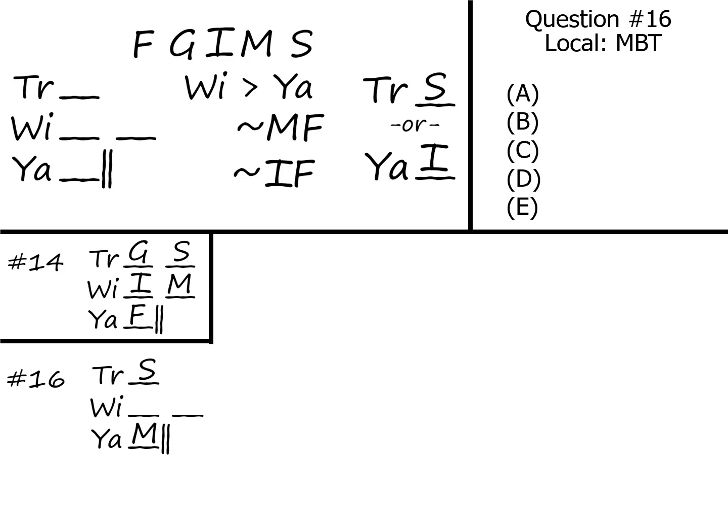Which means that we're going to fill in some spaces here and that means the Trents need to have two spaces in order for them to hold one of the two, I and F, which means that the only thing left, the G, is going to go to the Williamses.